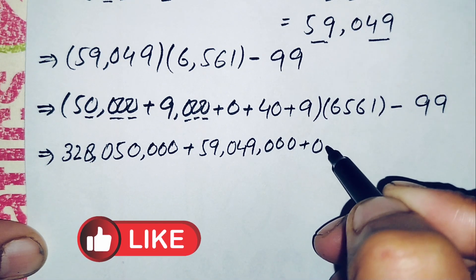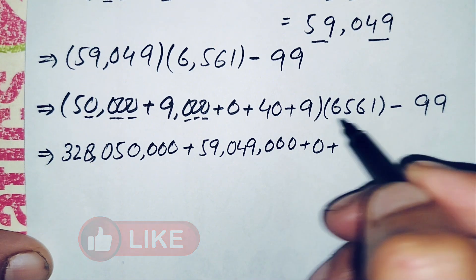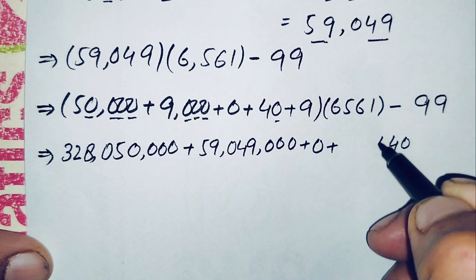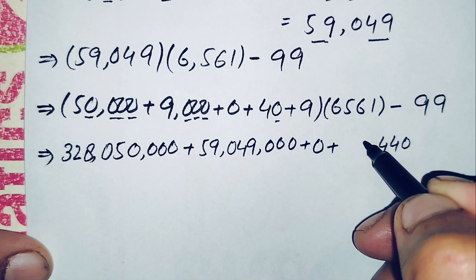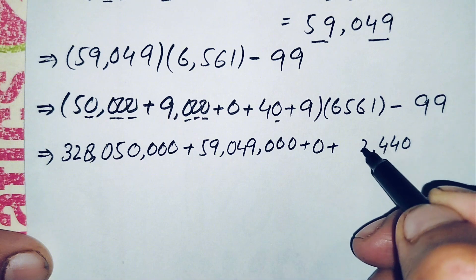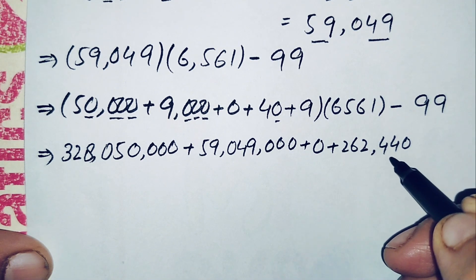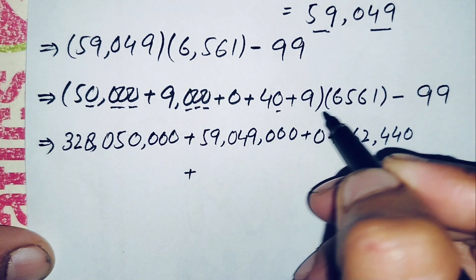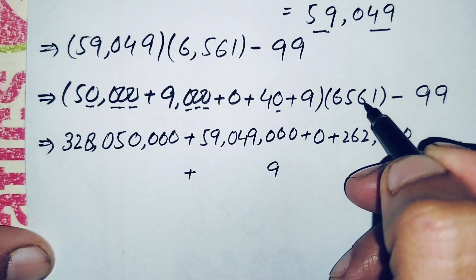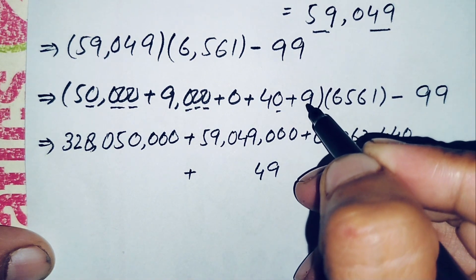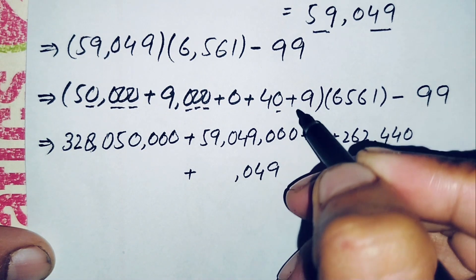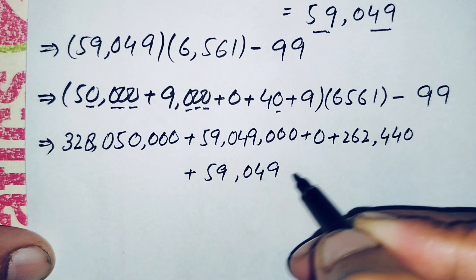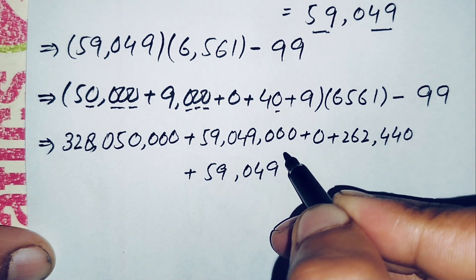The 0 term contributes 0. Next, 6561 times 40: 4 times 1 is 4, 4 times 6 is 24 carry 2, 4 times 5 is 20 plus 2 is 22 carry 2, 4 times 6 is 24 plus 2 is 26 — giving 262440. Finally, 6561 times 9: 9 times 1 is 9, 9 times 6 is 54 carry 5, 9 times 5 is 45 plus 5 is 50 carry 5, 9 times 6 is 54 plus 5 is 59 — giving 59049.